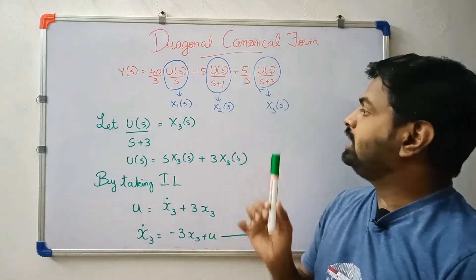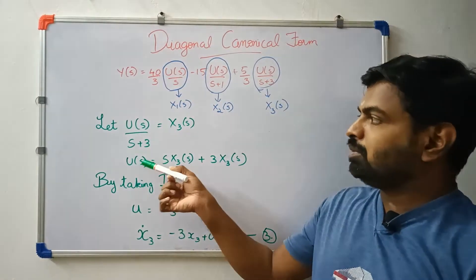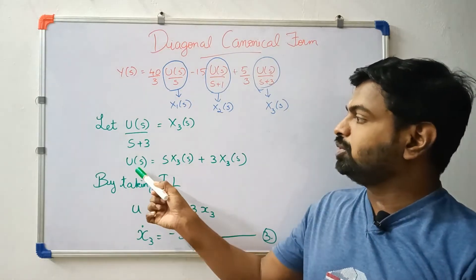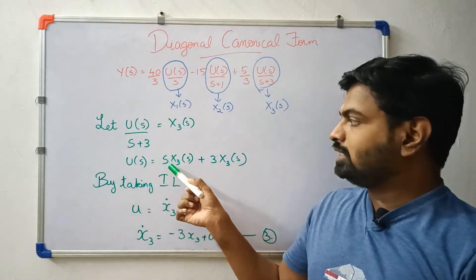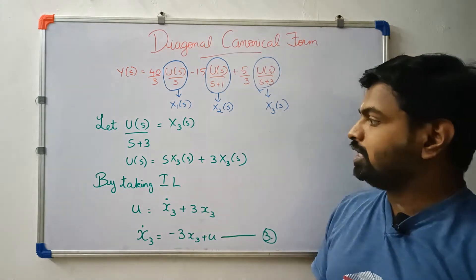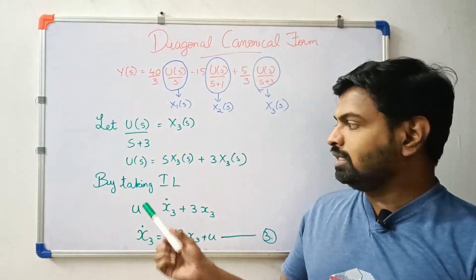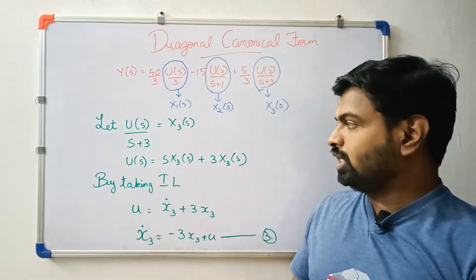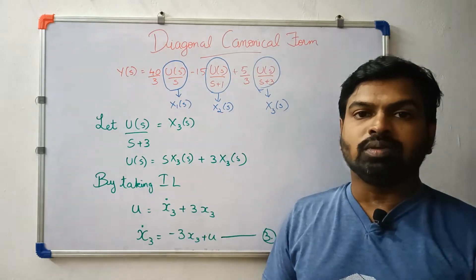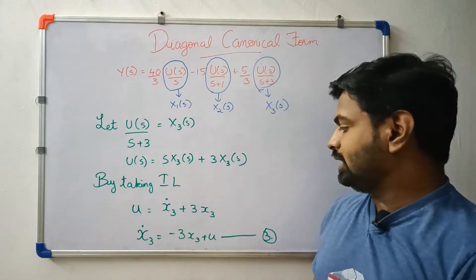For the third term: U(s) by (s plus 3) equals X3(s). We cross multiply: U(s) equals s into X3(s) plus 3 into X3(s). Therefore x3 dot is equal to minus 3x3 plus u.